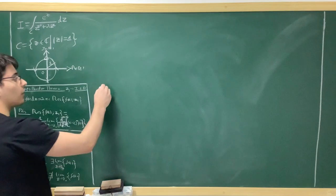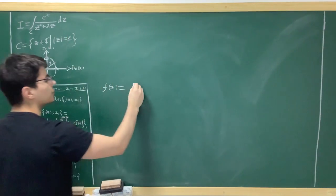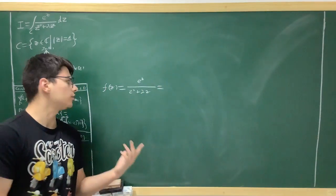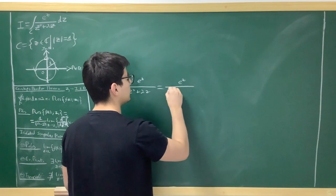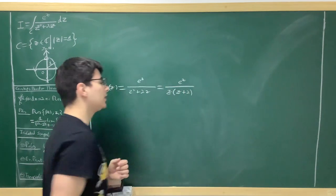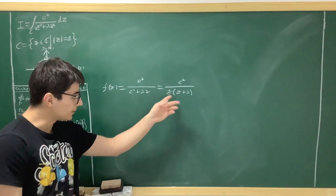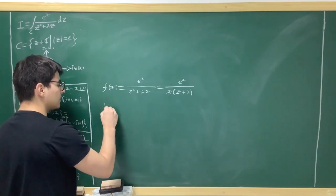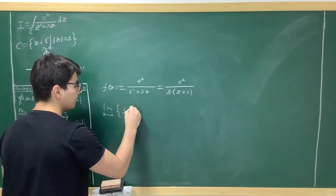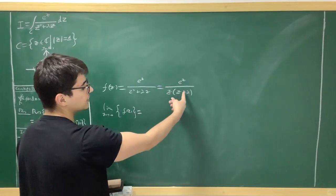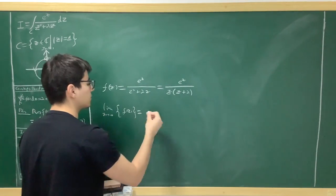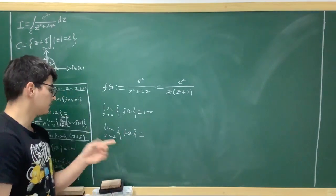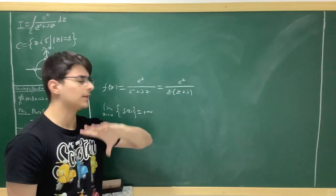In our case, our function f(c) is e^c over c² + 2c. A nice way to write this to identify poles is e^c over c(c + 2). We see there are two points where the function is not analytic: c = 0, because the function goes to positive infinity there, and c = −2, because e^(−2) over 0 also goes to positive infinity. So we have two poles: one at c = 0 and one at c = −2.